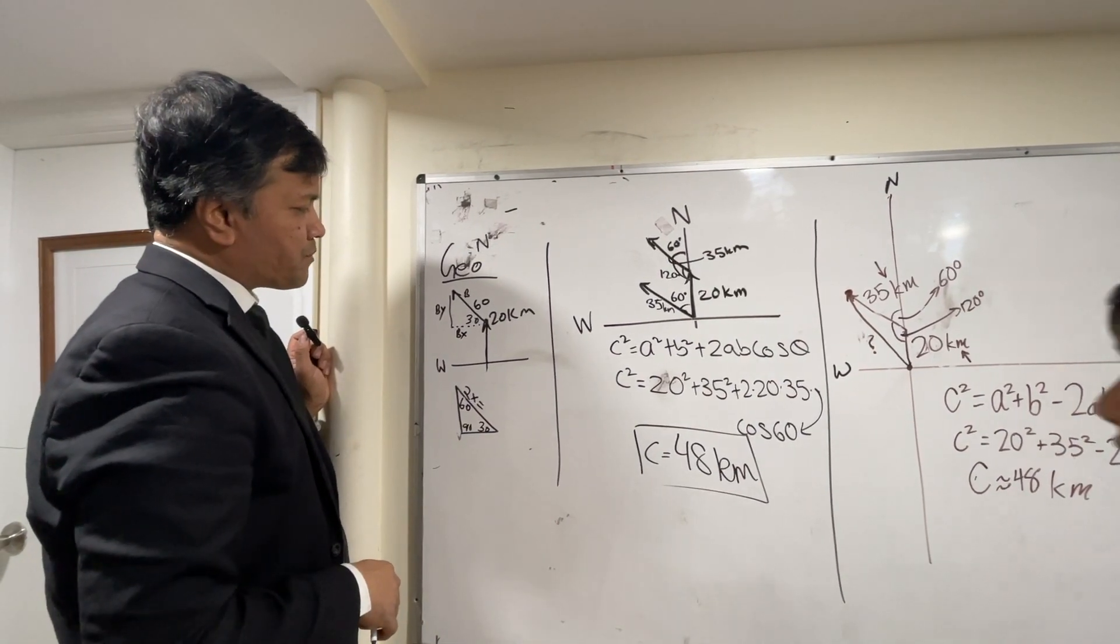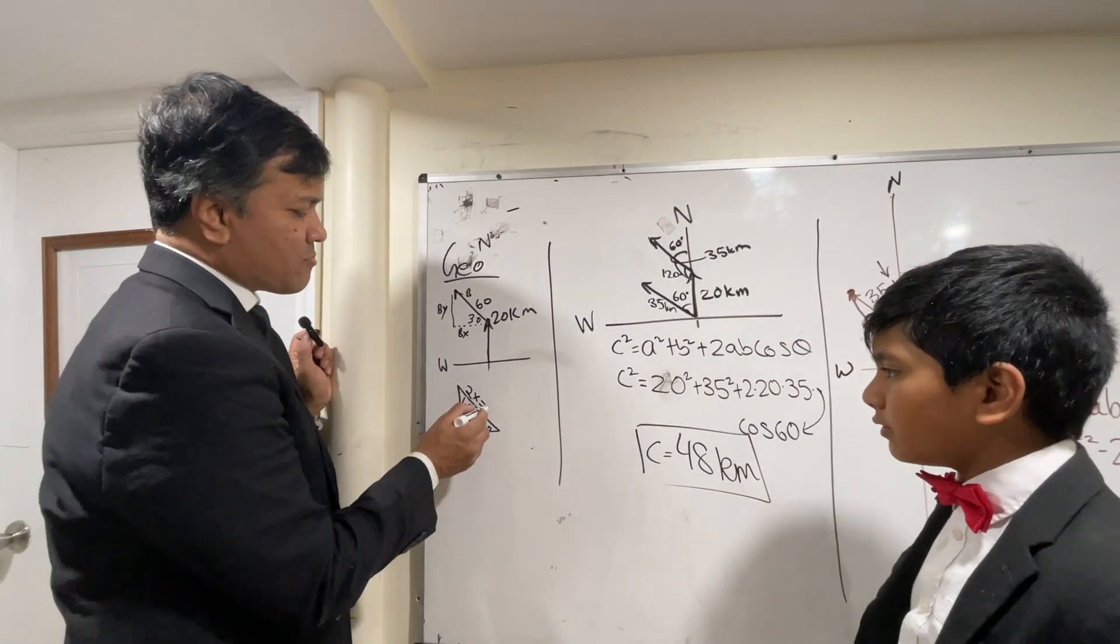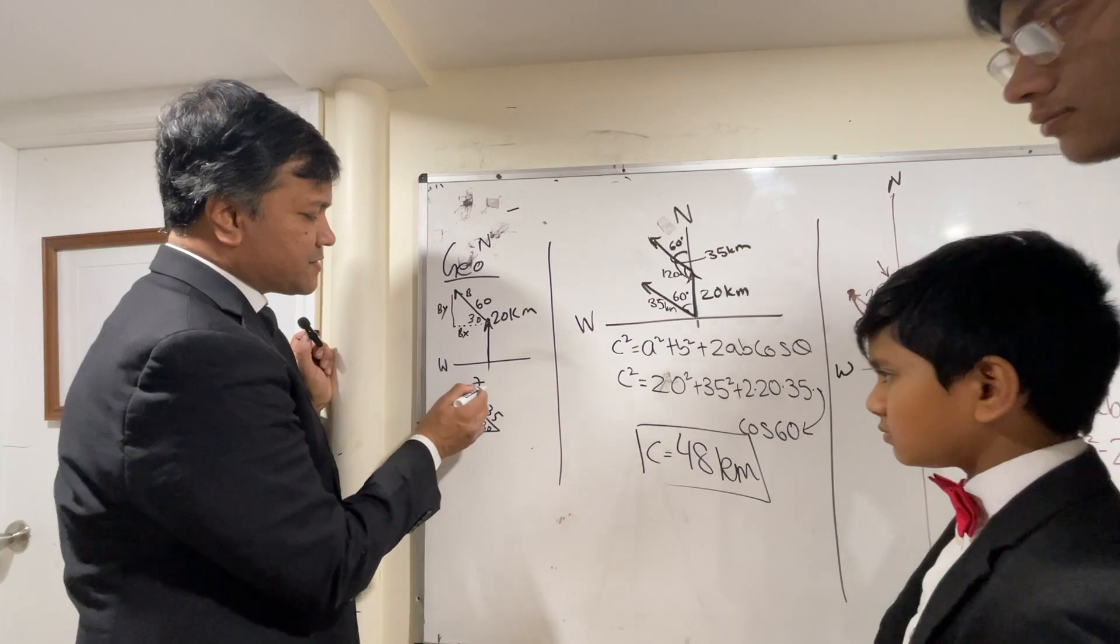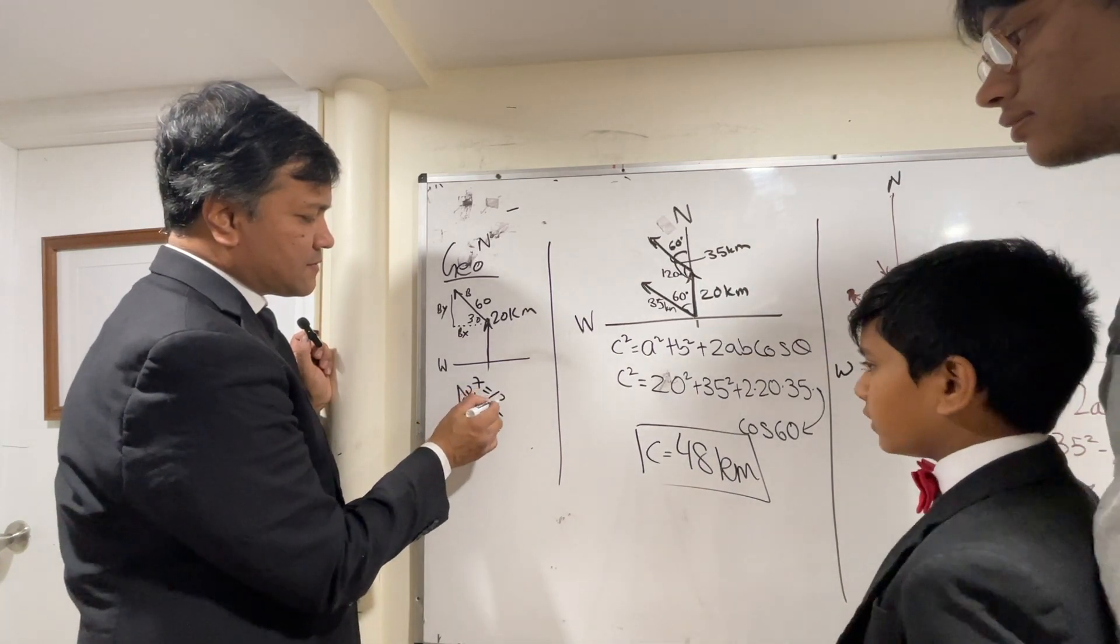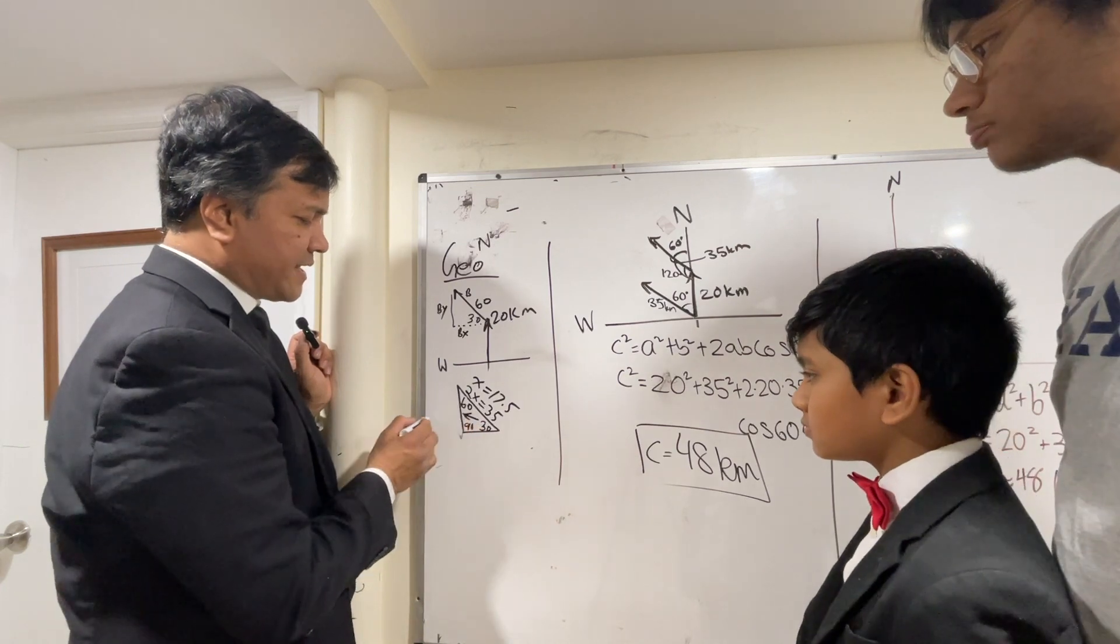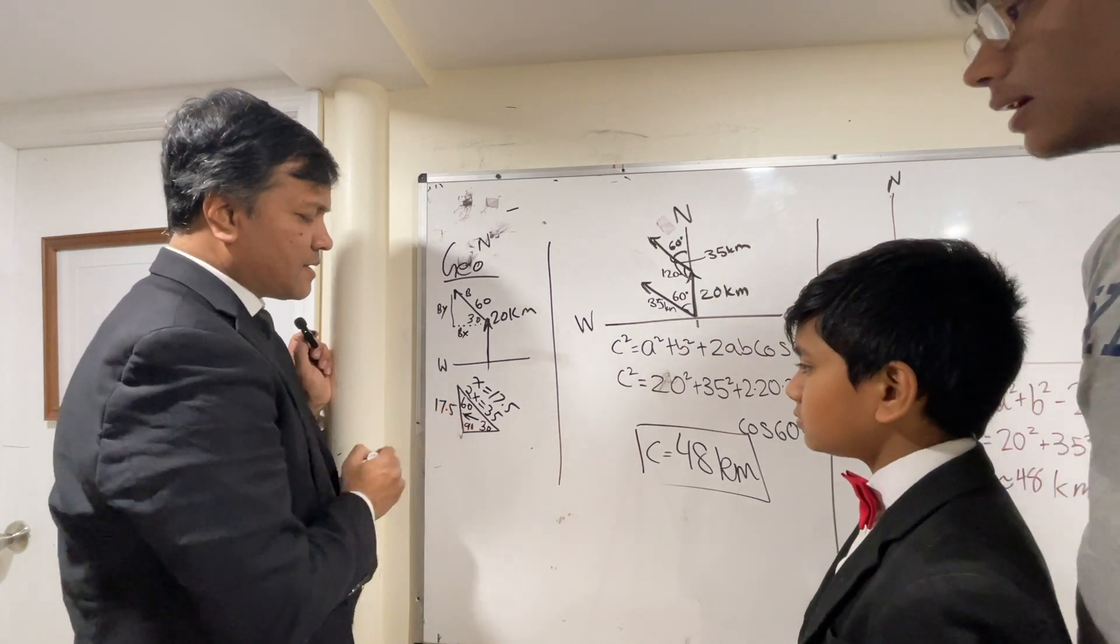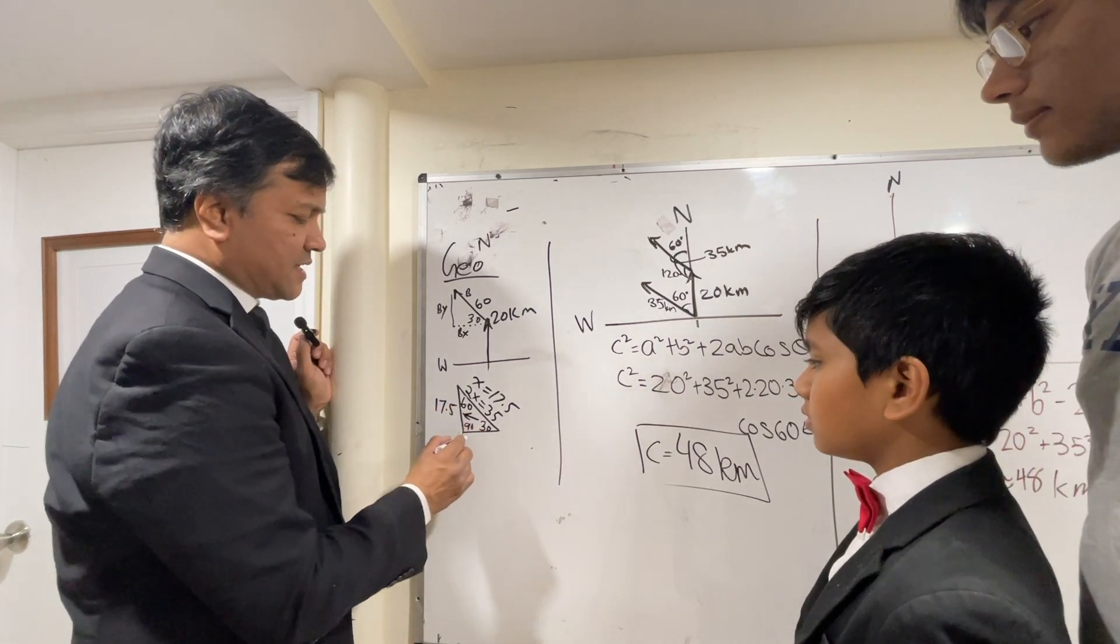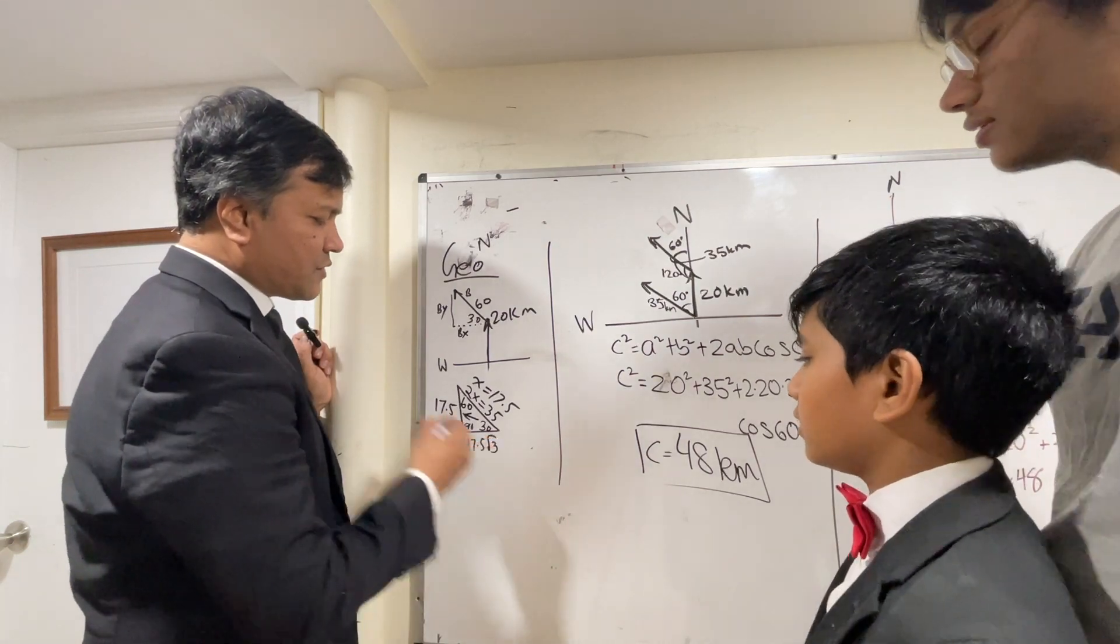All right. So 2x is equal to 35. So 35. Then x is? 17.5. 17.5. Then what about the opposite to 30? So is it 17.5? Yeah. What is the opposite to the 60? 17.5 times the square root of 3.